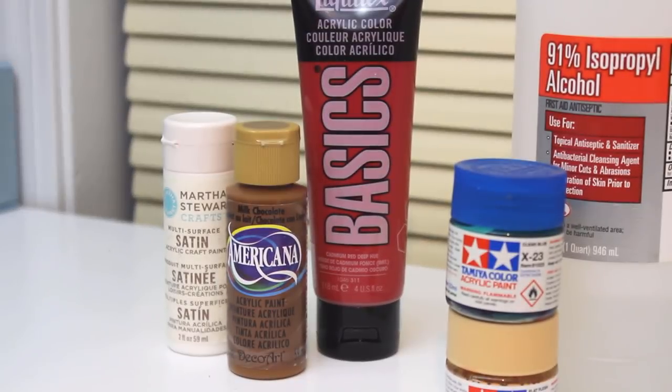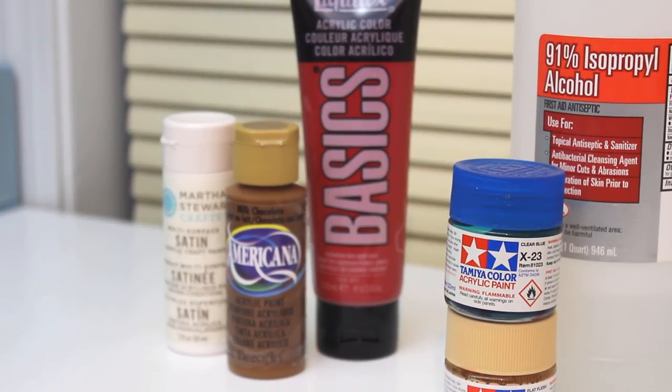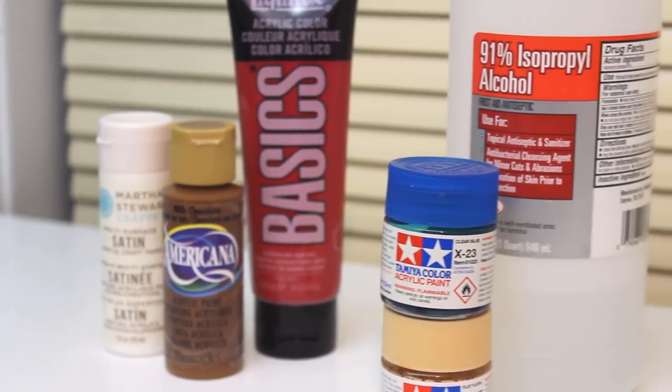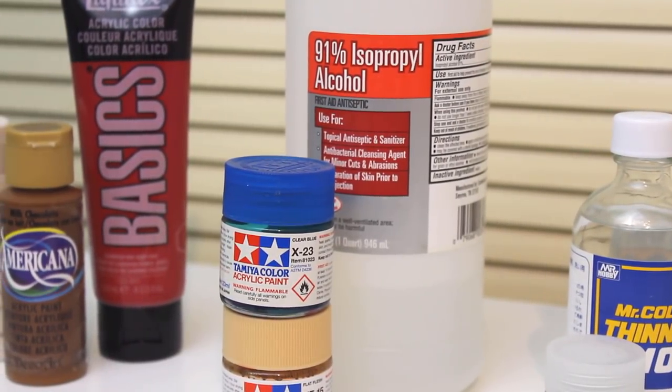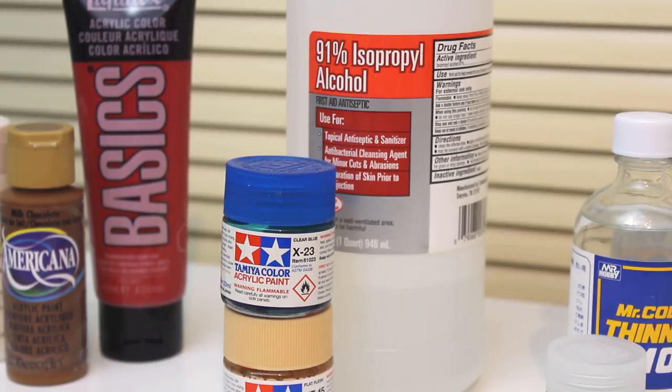But if you're using alcohol-based acrylics like Tamiya, you want to avoid water and thin using either that specific brand's acrylic thinner or rubbing alcohol from your local drugstore. Using water with these can cause them to turn lumpy too.